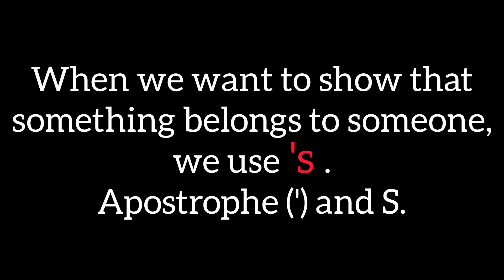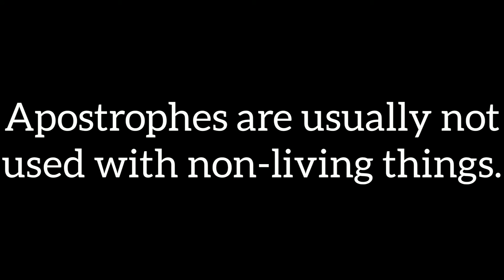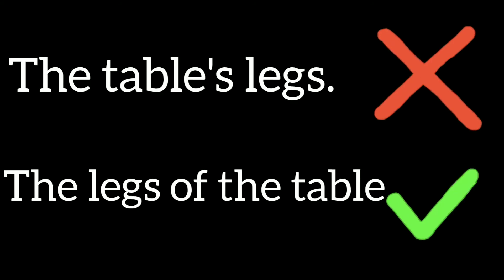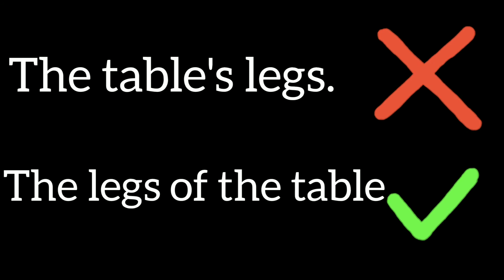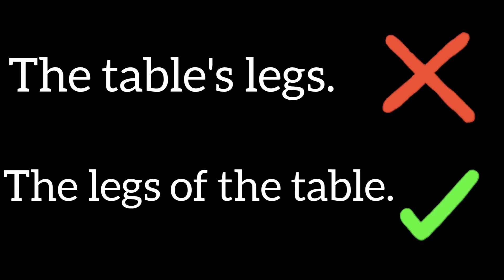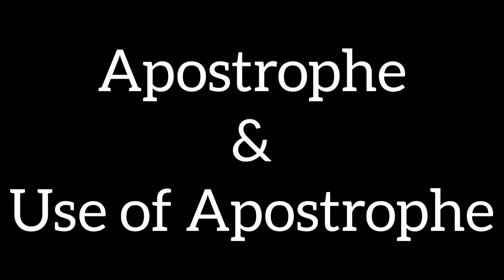When we want to show that something belongs to someone, we use apostrophe s. Apostrophes are usually not used with non-living things. We do not say the table's legs. Instead, we say the legs of the table.